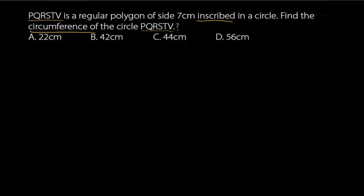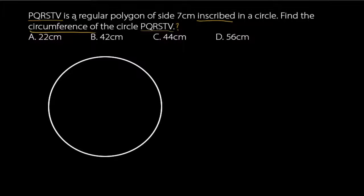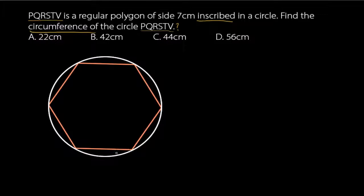Let's draw our circle first, then draw the polygon PQRSTV inscribed in it. We label each vertex of the polygon P, Q, R, S, T, V. Since it's a regular polygon, all sides are equal, each having a length of 7 cm.